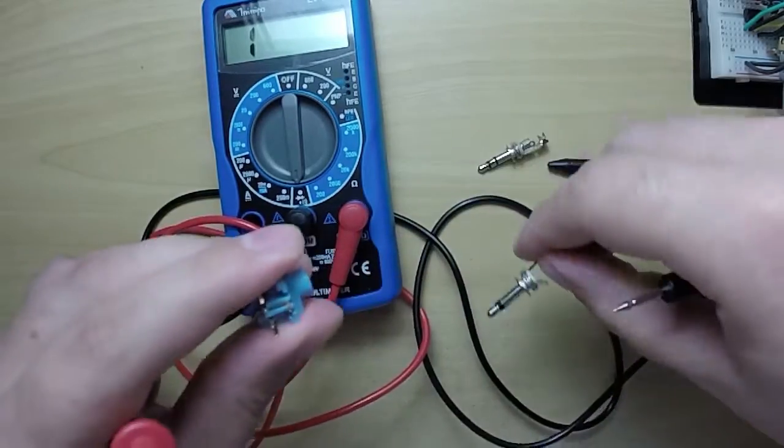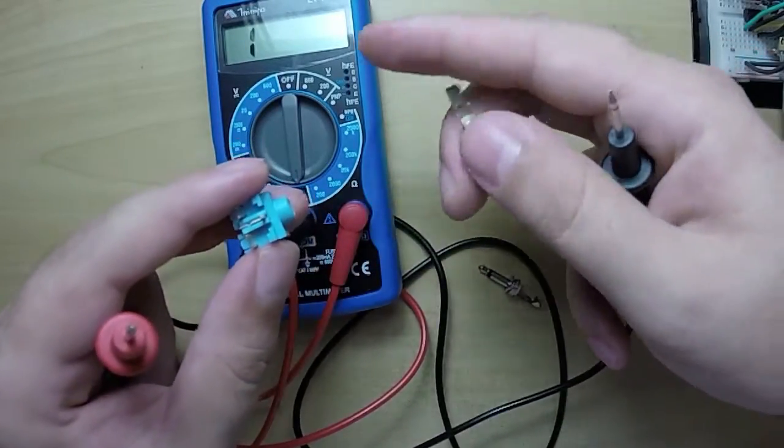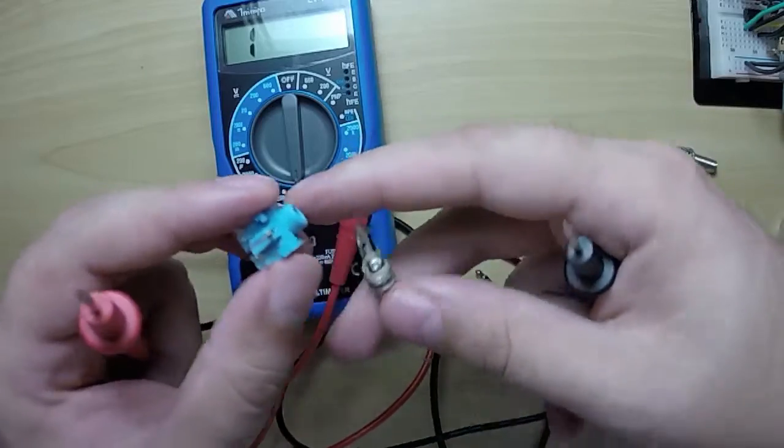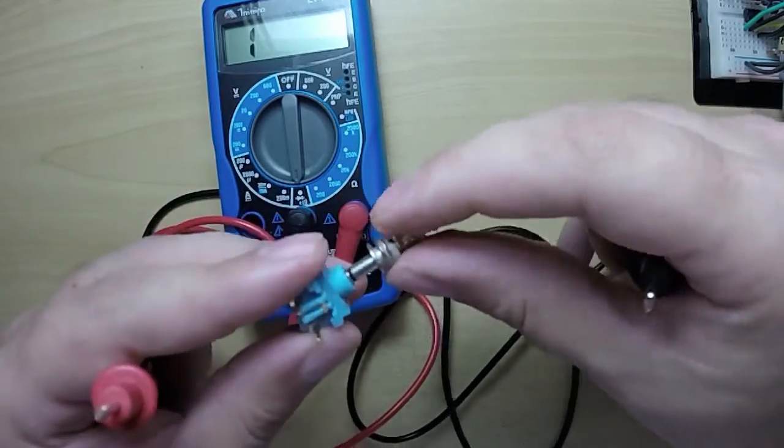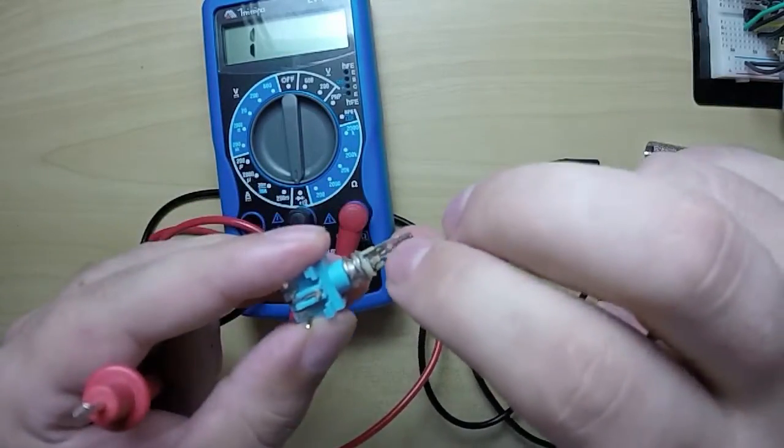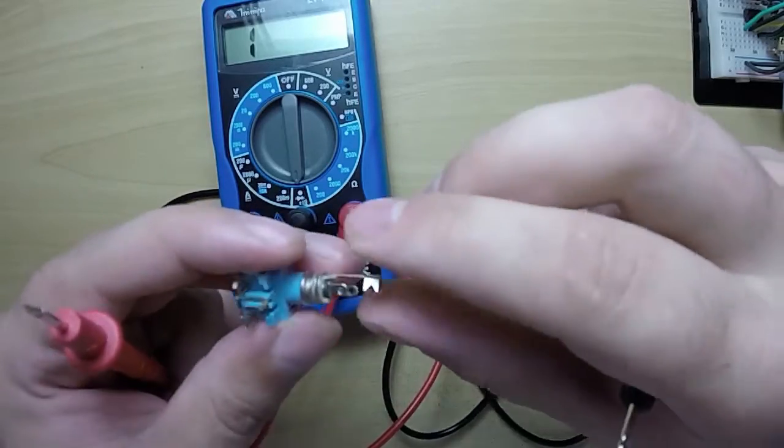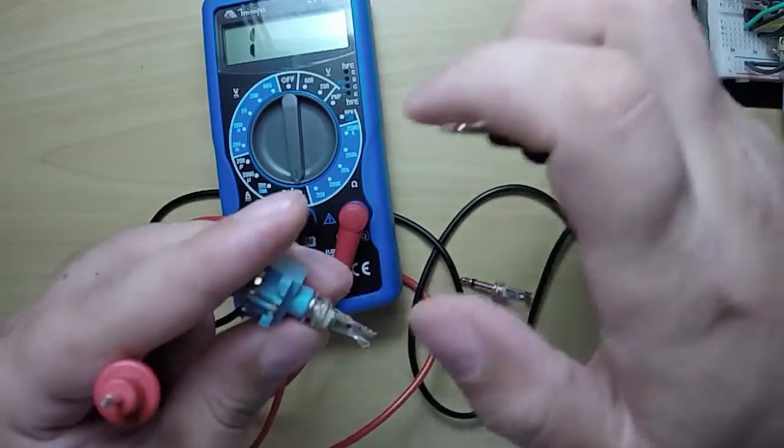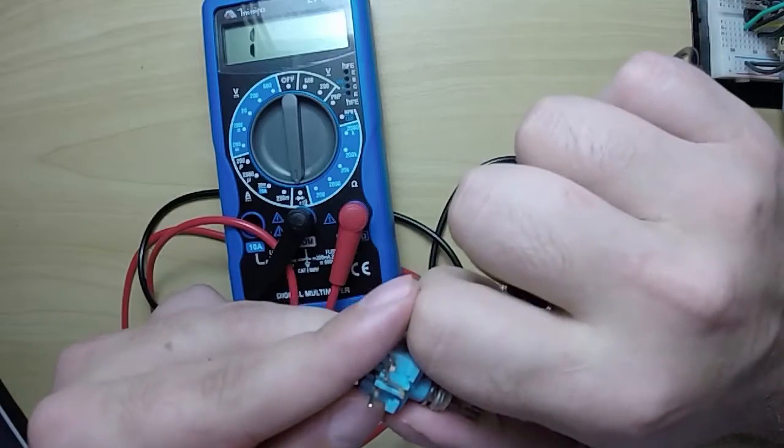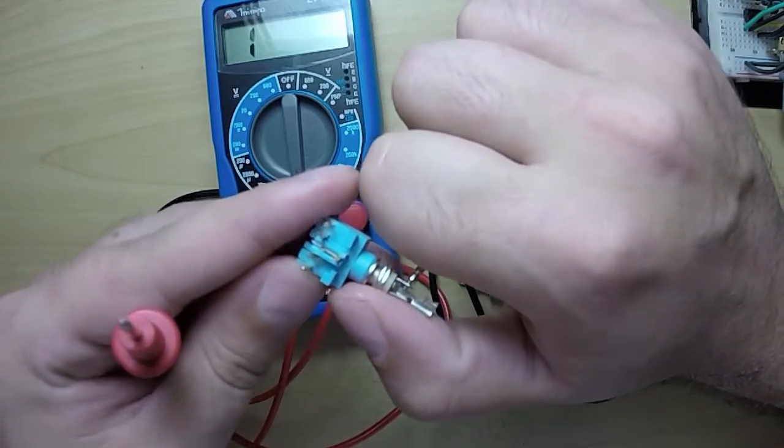And we can do the same thing with the stereo jack. We would plug that in, and the stereo jack's going to have three sleeves. The ground sleeve is the big one always, and then the left and the right channel, so we could come in and test this.